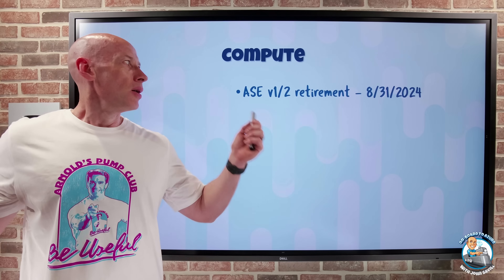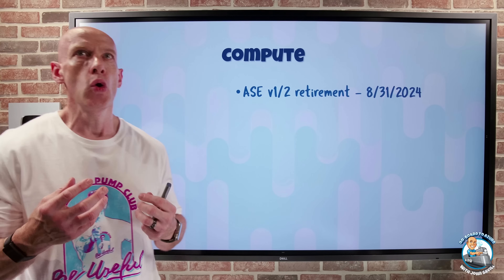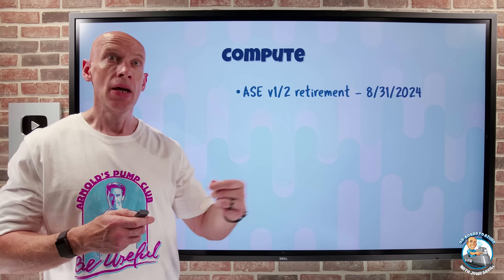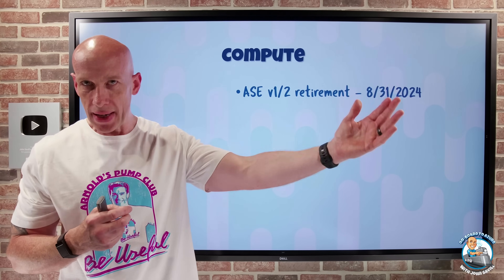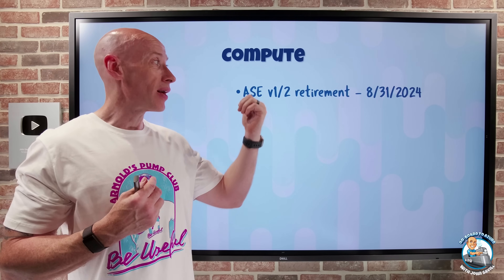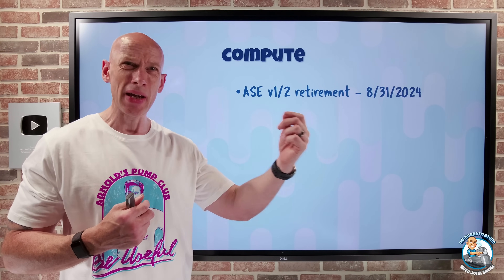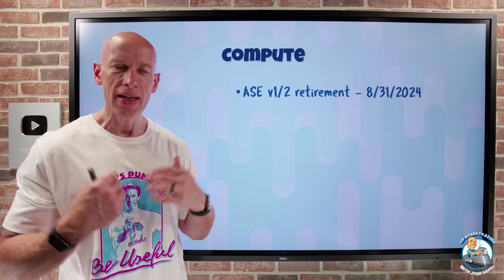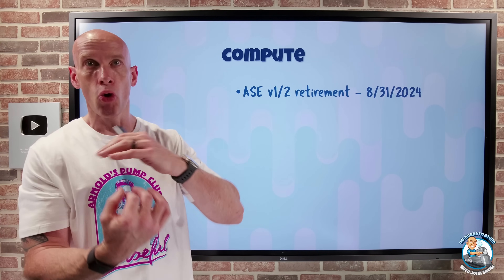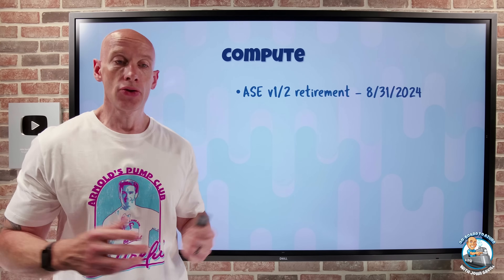On to what's actually new. App Service Environments give you a dedicated set of services to host app services — instead of shared components, it's all dedicated to you. The ASE V1 and V2 are being retired end of August 2024, so you want to move to the ASE V3, which is better anyway. They've optimized the pricing, it integrates with your virtual network, and there are a whole set of improvements around the data plane, control plane, and access requirements.